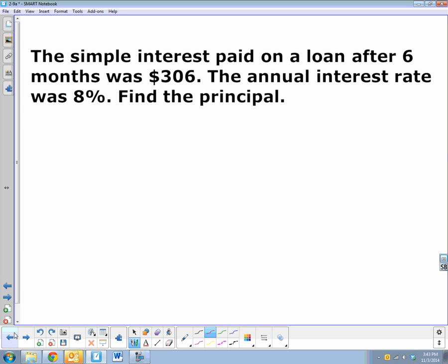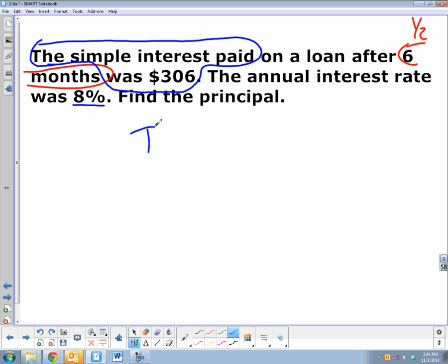And so that's how interest can be played out in both ways. You have to pay extra as a thank you to a bank, but if you lend money you get paid extra as a thank you and you don't have to do anything about it. Oh, we do have another one, sorry. So the simple interest paid on a loan after six months. So here's my time, six months. Remember we have to change that to years. Six months is half of a year. The simple interest paid was $306. So I know the interest paid. The annual interest rate, the interest rate was 8%. Find the principal.